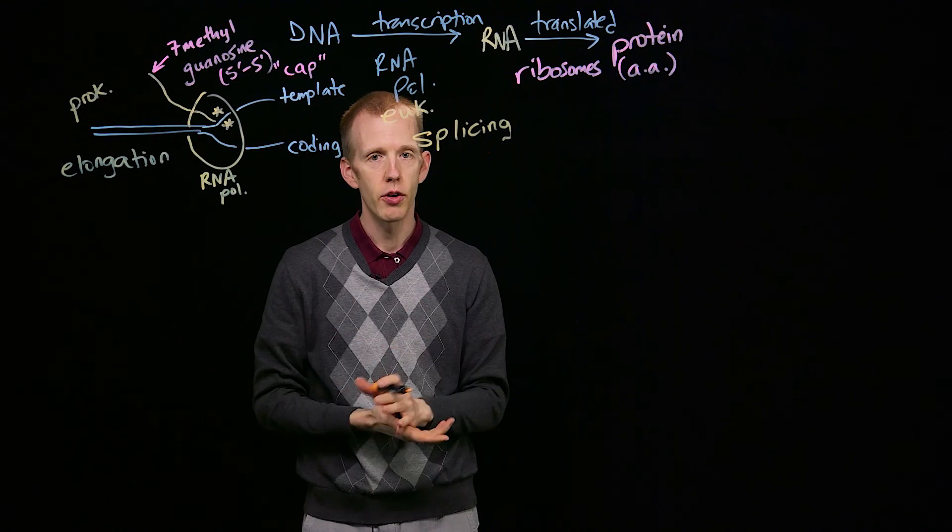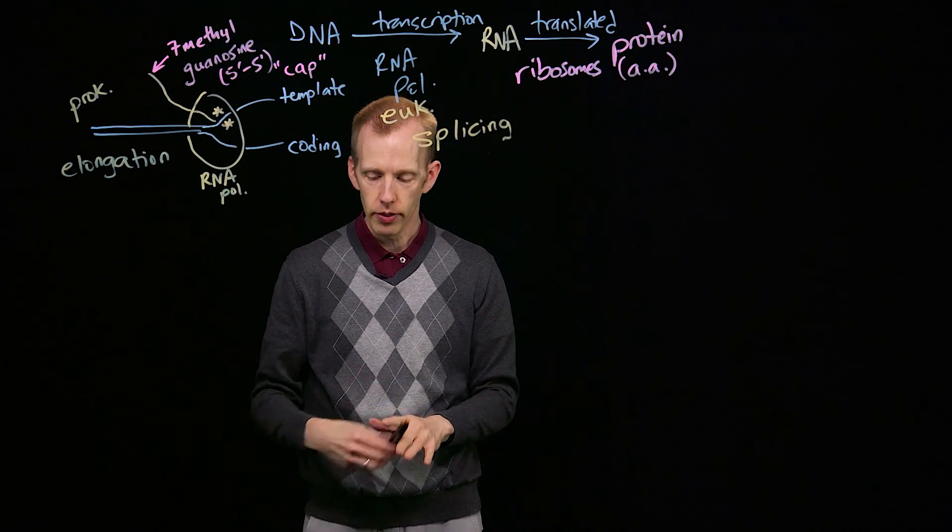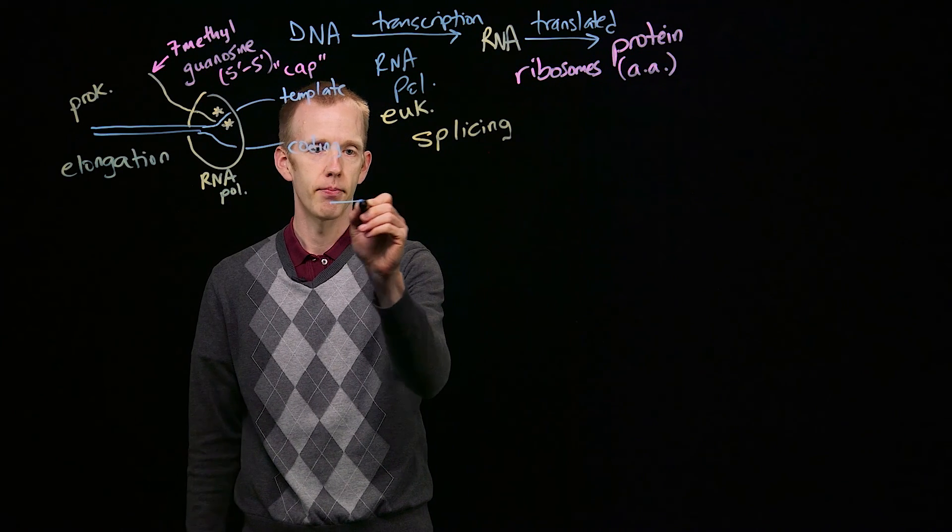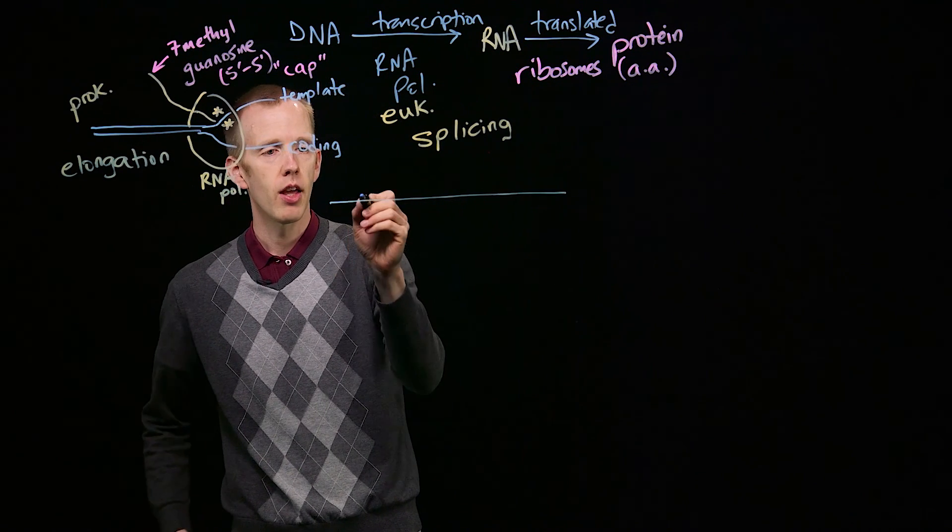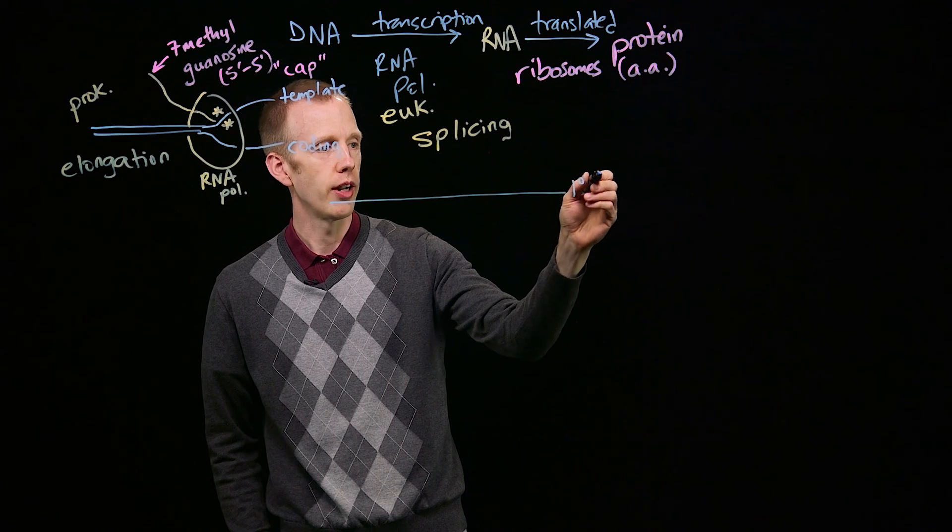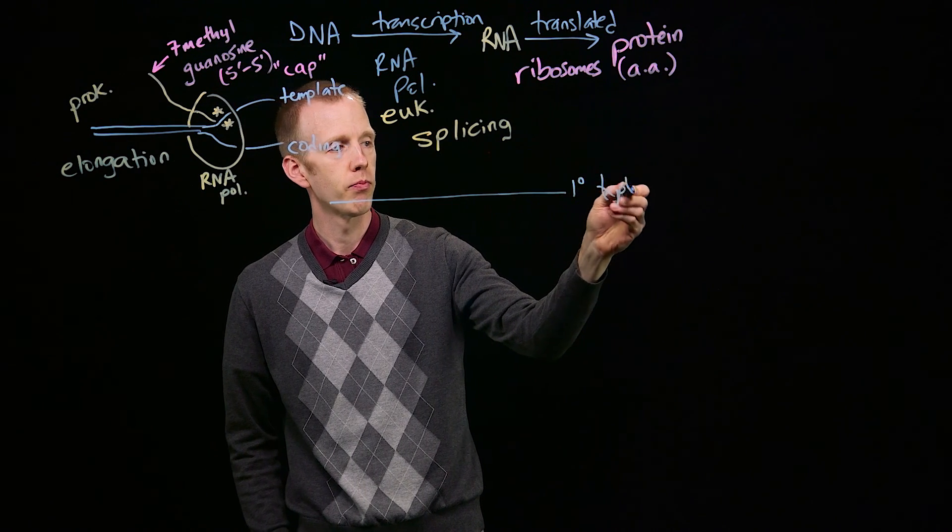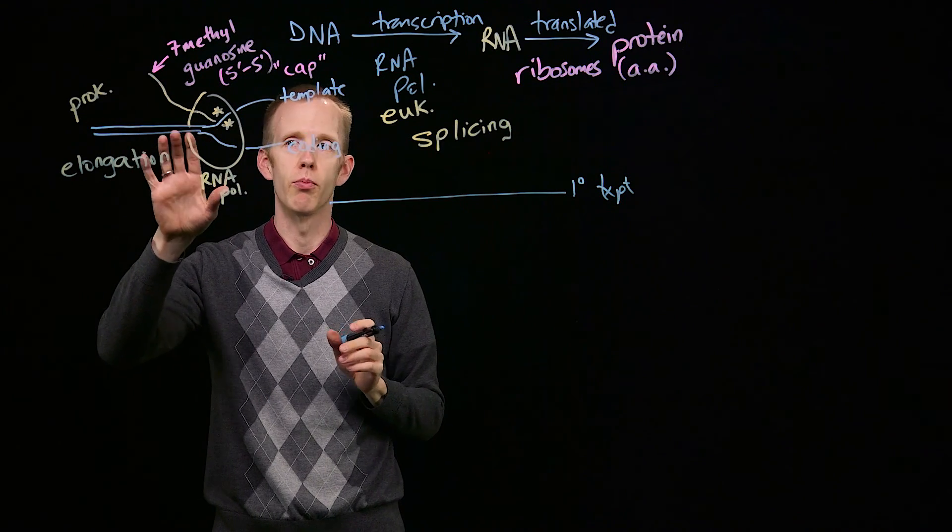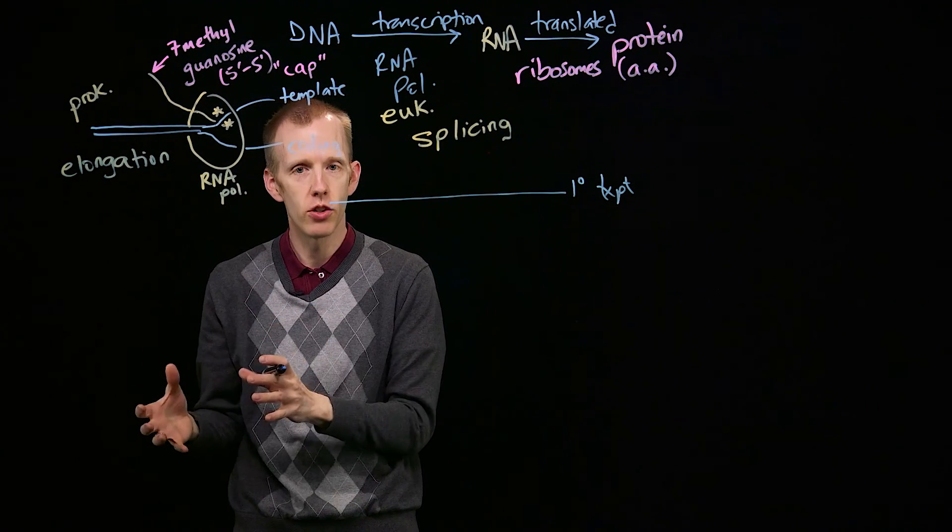This is eukaryote specific again. And what this entails is, some scientists at some point realized that if you looked at the primary transcript, that is the initial RNA molecule that's produced by the RNA polymerase molecule in the nucleus,